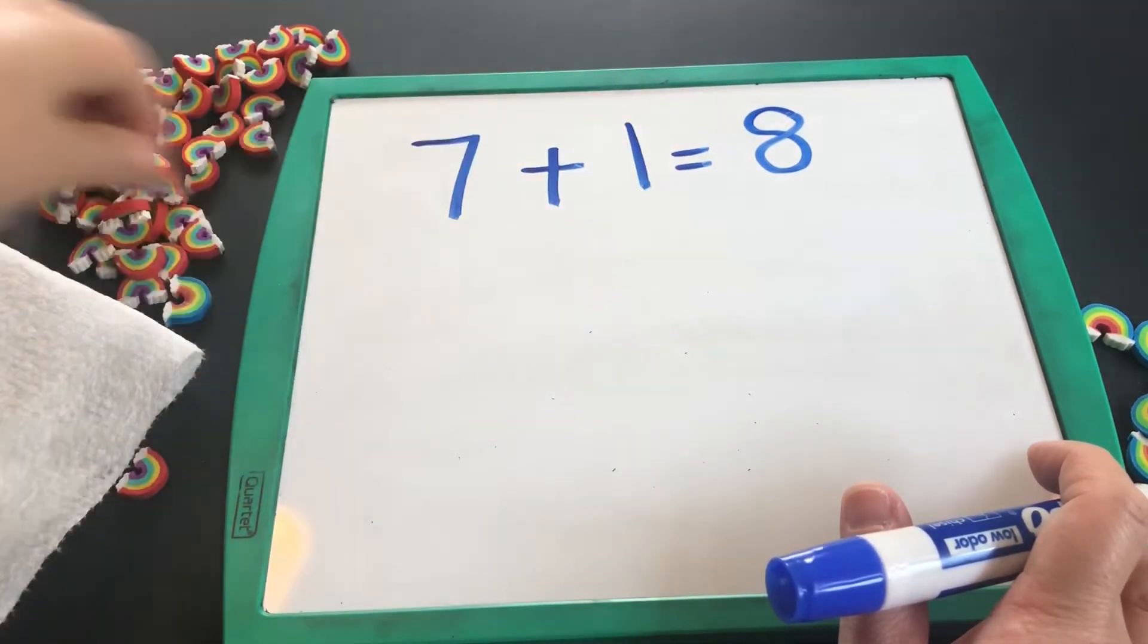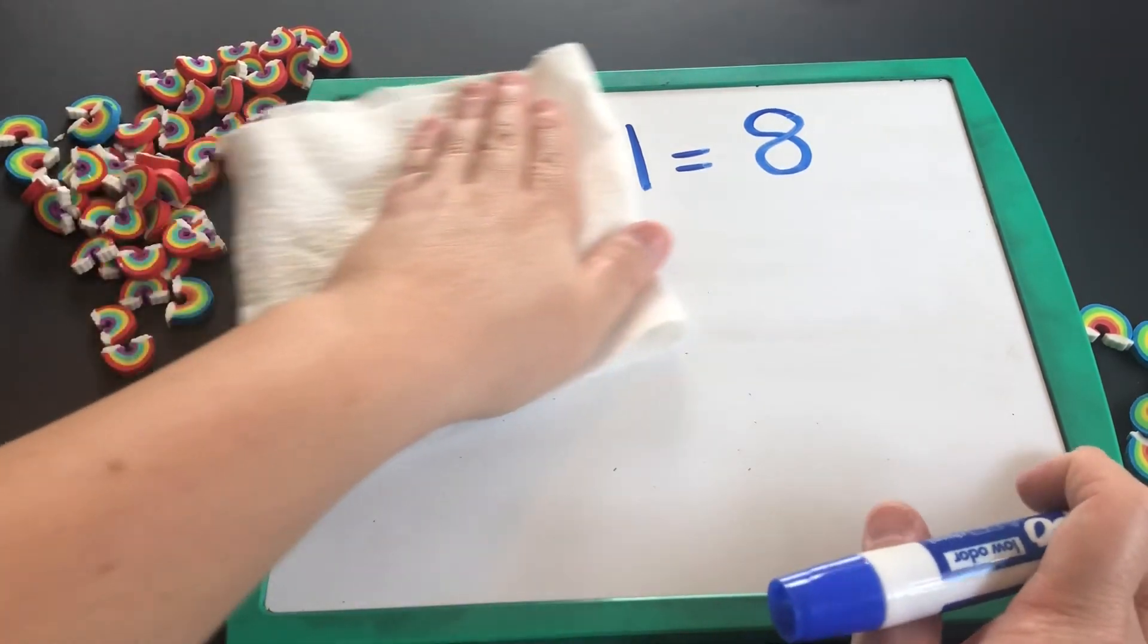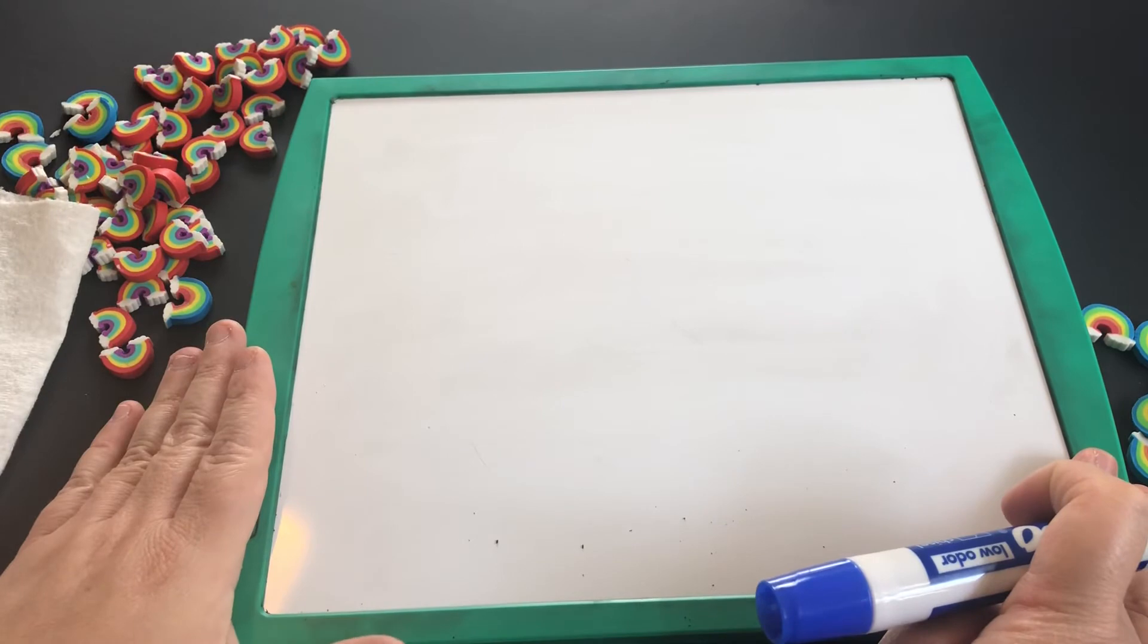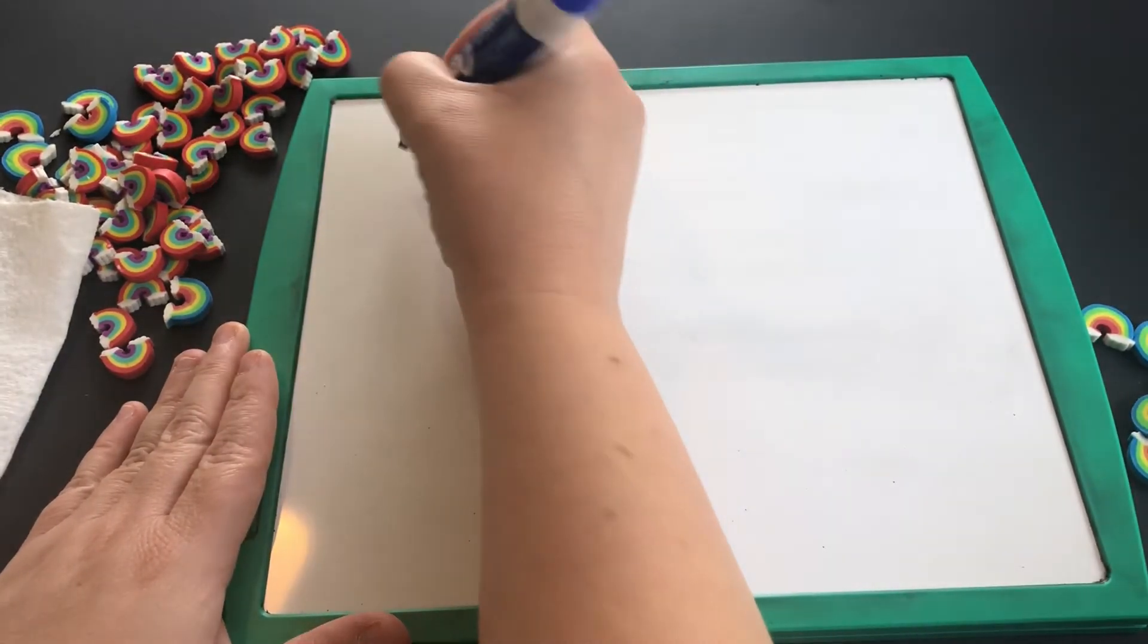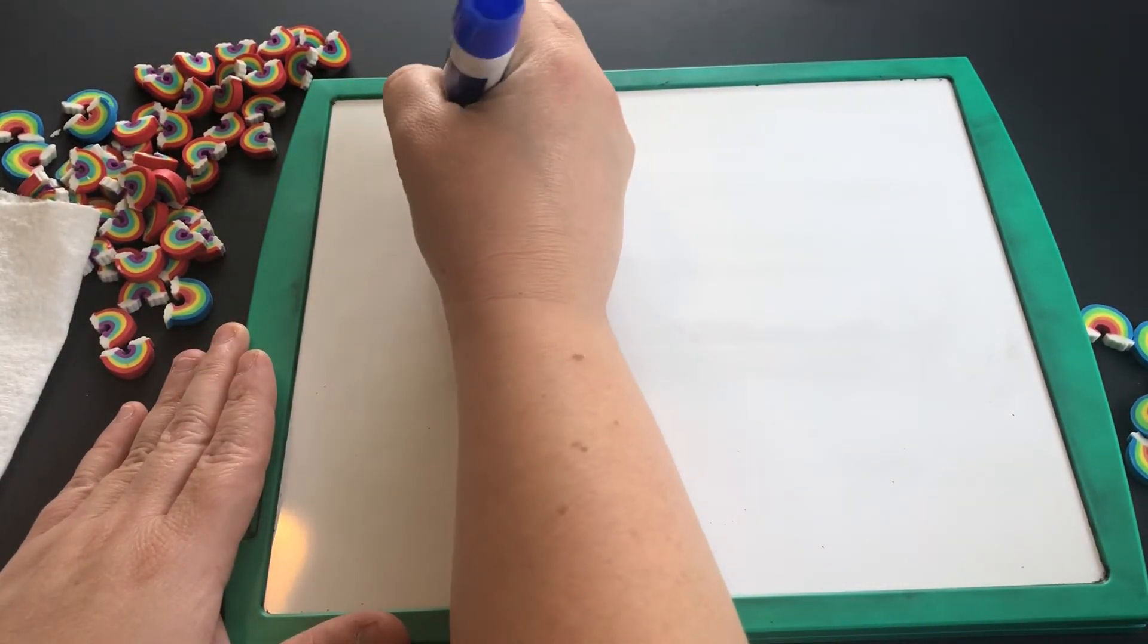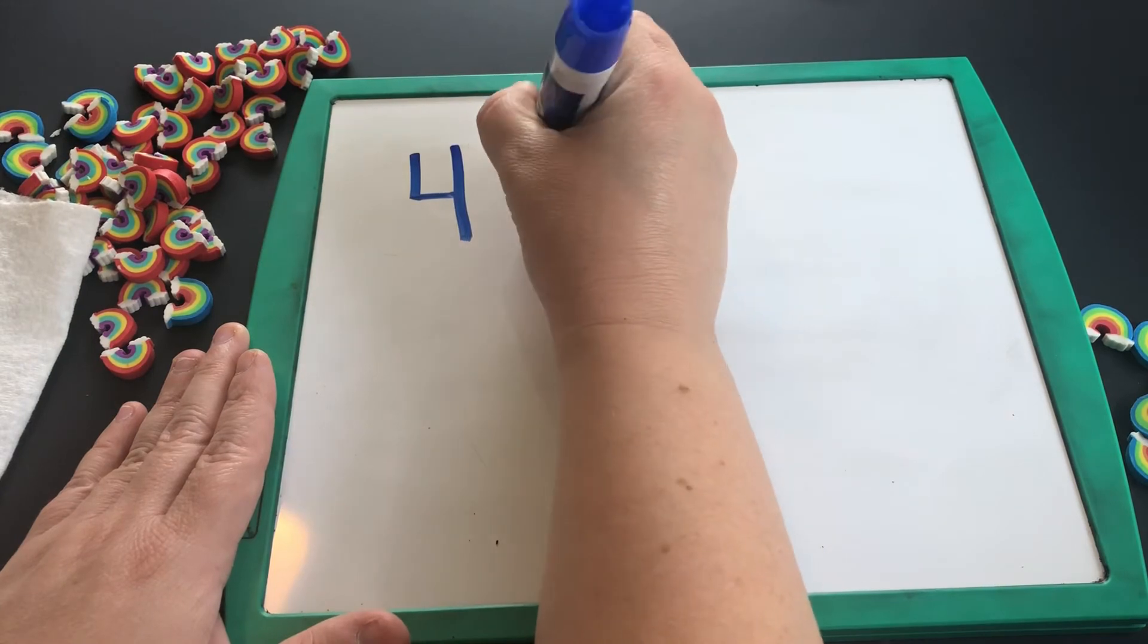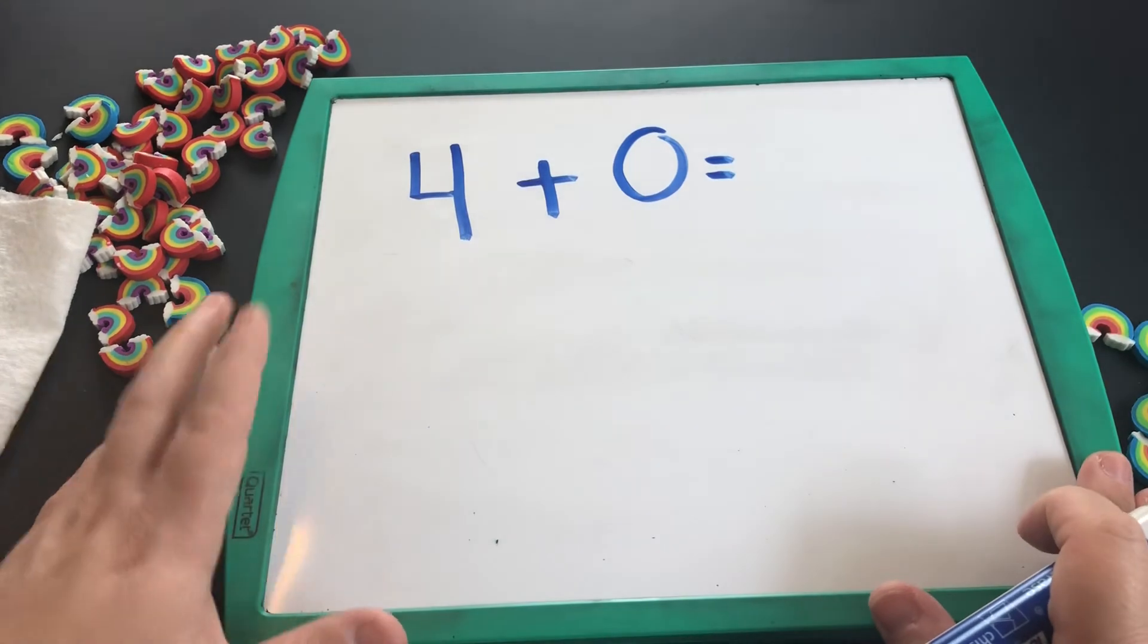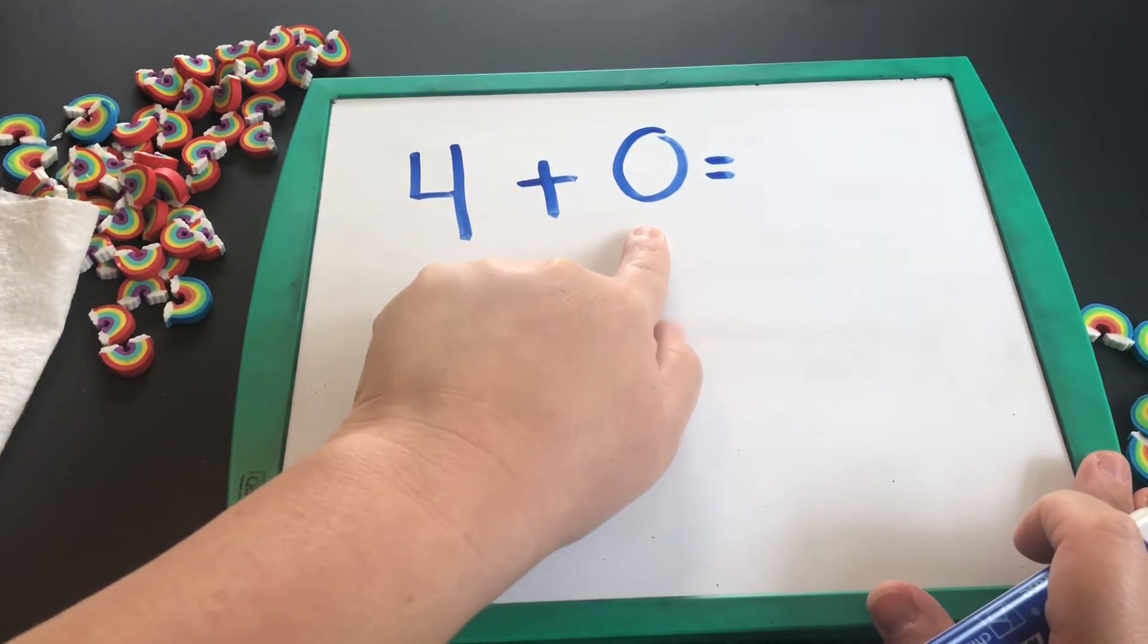Let's try one more together, and then you can try some addition problems at home. Let's do four plus zero. Boys and girls, how many is zero?